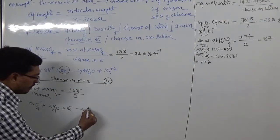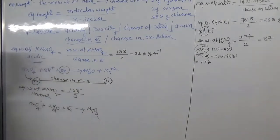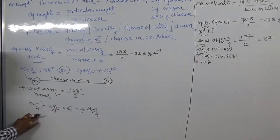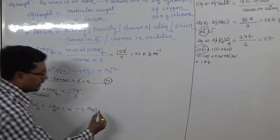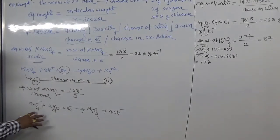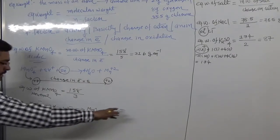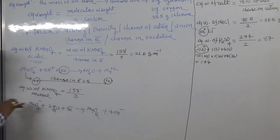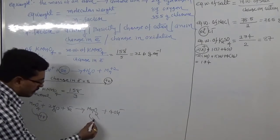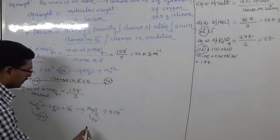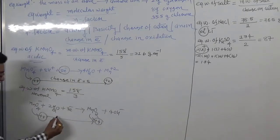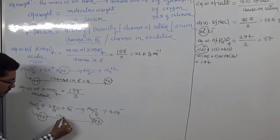In neutral medium, MnO₄⁻ reacts with 2 water molecules and gains 3 electrons, converting to manganese dioxide MnO₂, producing 4 OH⁻. Oxidation number of Mn in MnO₄⁻ is +7 and in MnO₂ it is +4, so change in electron is 3. Therefore equivalent weight of KMnO₄ in neutral medium is 158 divided by 3, which equals 52.67 gram equivalent.